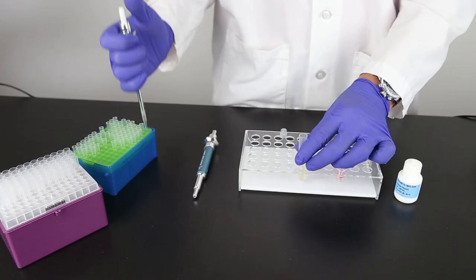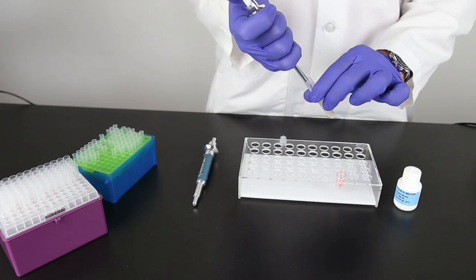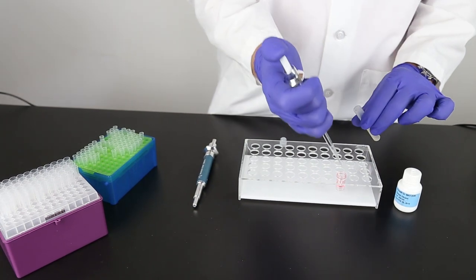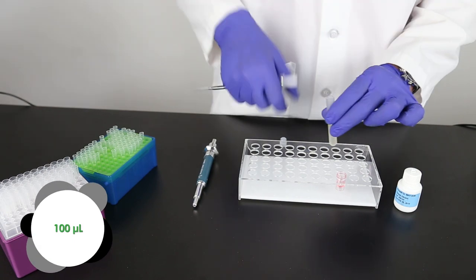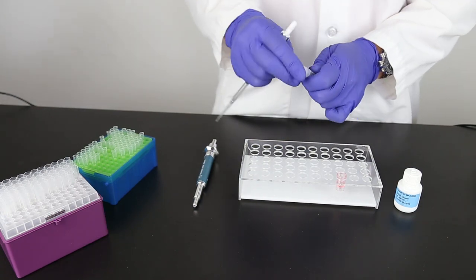For each sample you are testing, place a red dilution cup into the sample rack. Add 100 microliters sample extract to the red dilution cup.